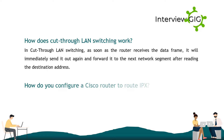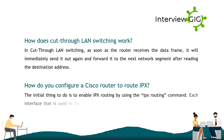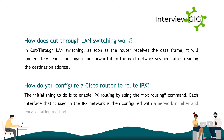How do you configure a Cisco router to route IPX? The initial thing to do is to enable IPX routing by using the ipx routing command. Each interface used in the IPX network is then configured with a network number and encapsulation method.